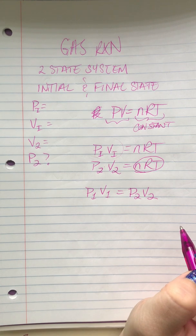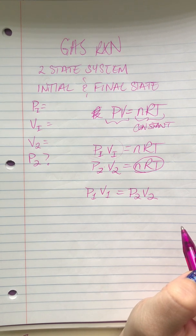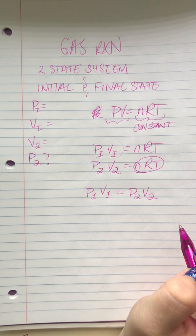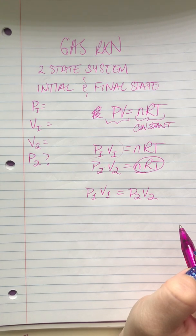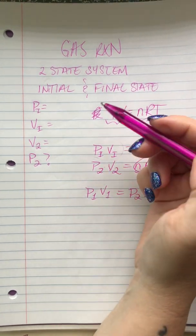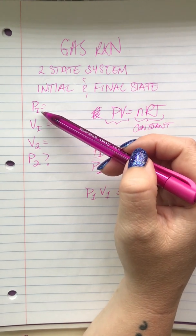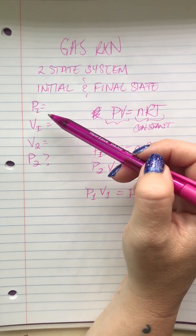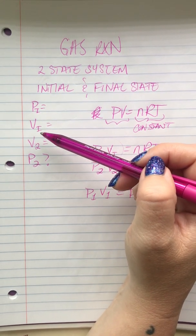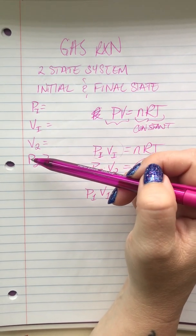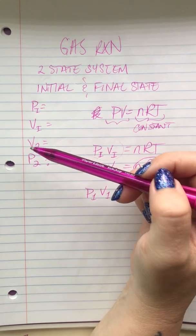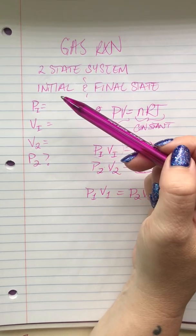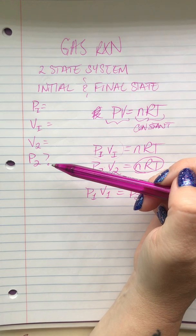Is everybody picking up what I'm laying down there? Anytime you're given a problem where they say an initial pressure was blah and the volume was this, we changed the volume, what is the pressure now? That would be a two-state system. You're starting off with an initial condition and a final condition.